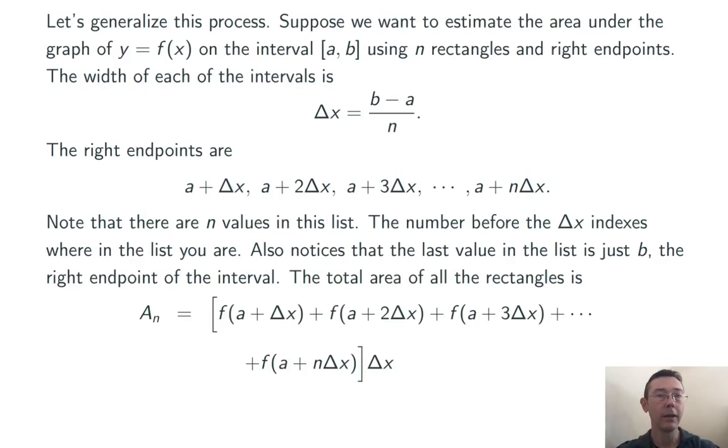Then we can write down a formula for the area under the graph approximated using n rectangles and right-hand endpoints. We get f of a plus delta x, plus f of a plus 2 delta x, plus f of a plus 3 delta x, and so on. That whole quantity multiplied by delta x. So we're summing up the heights of all the rectangles, and then multiplying that entire sum by the width of each rectangle.